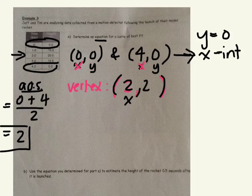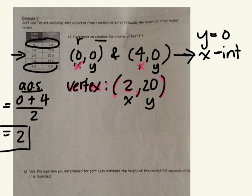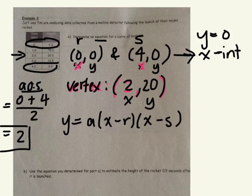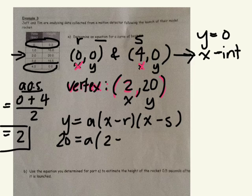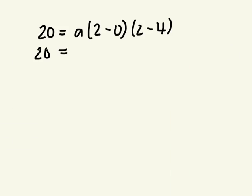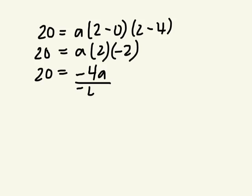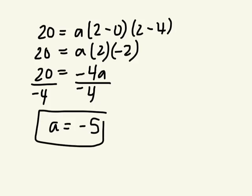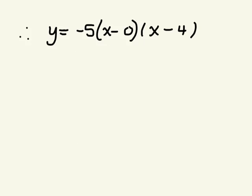2, 20. Good. So we know the vertex, we know our x and y, and we know r and s. I'm going to write the equation in factored form. y is 20, a I don't know, x is 2, r is 0, x is 2, s is 4. Solve and simplify. 2 take away nothing. 2 take away 4. Negative 4a equals 20. What's a? Negative 5. Good. So that's our equation in factored form.